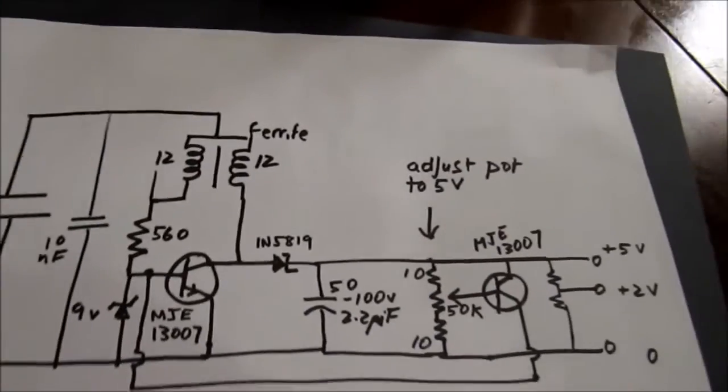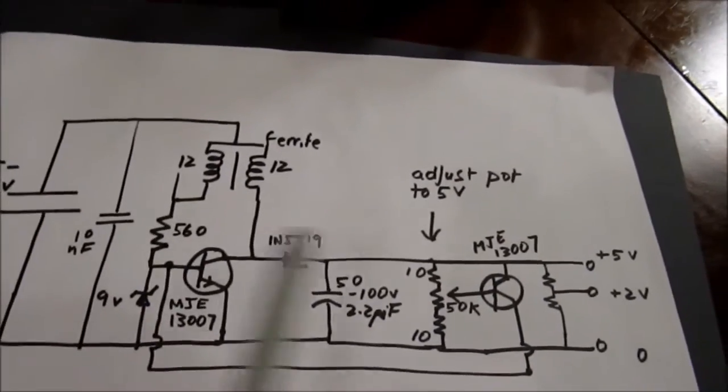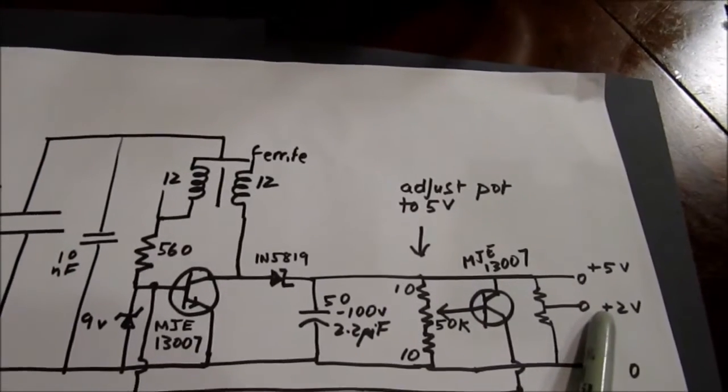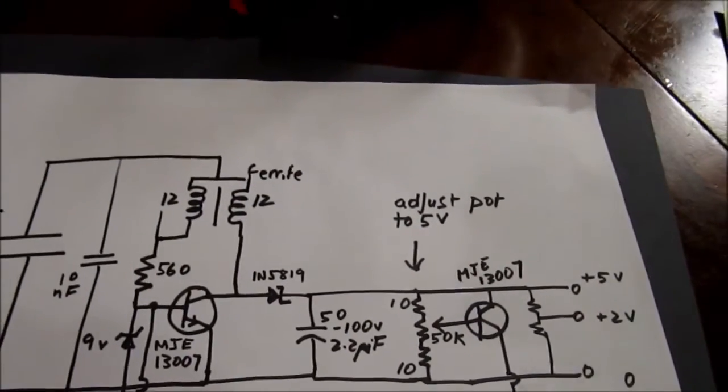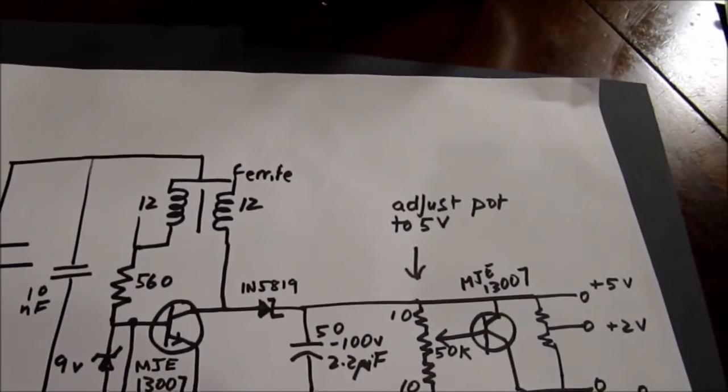But if you just took the 5 volt output and connected it to the green and the black wires on your USB cable, the phone cable will not work, and the reason is the newer phones need 2 volts of charge on the data cables.